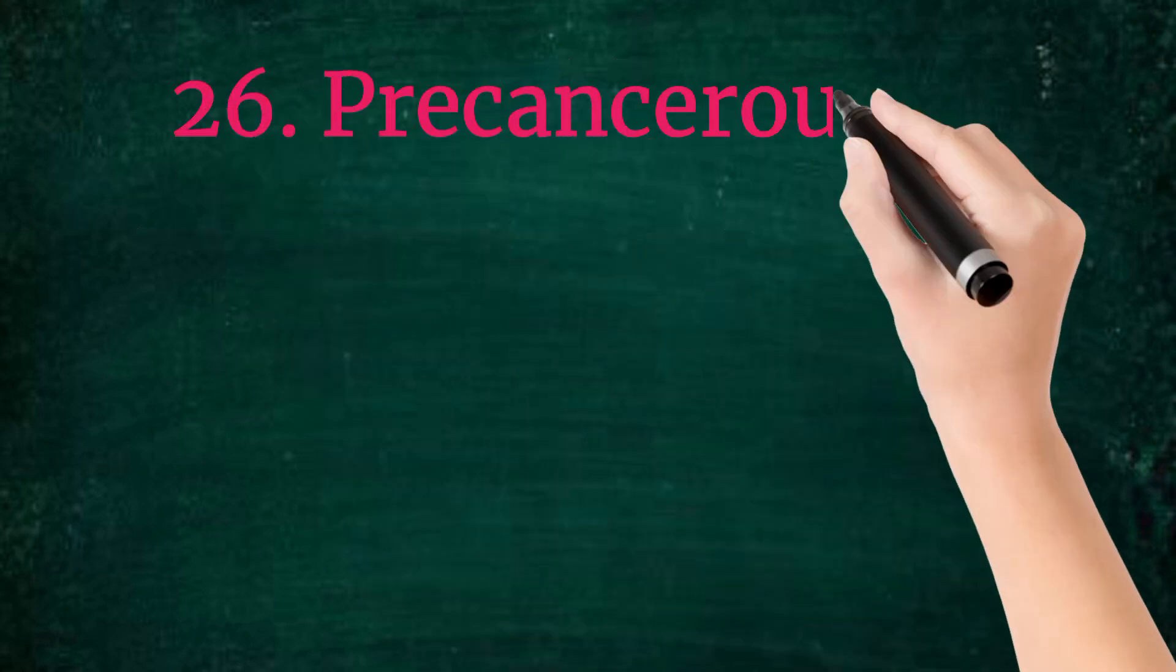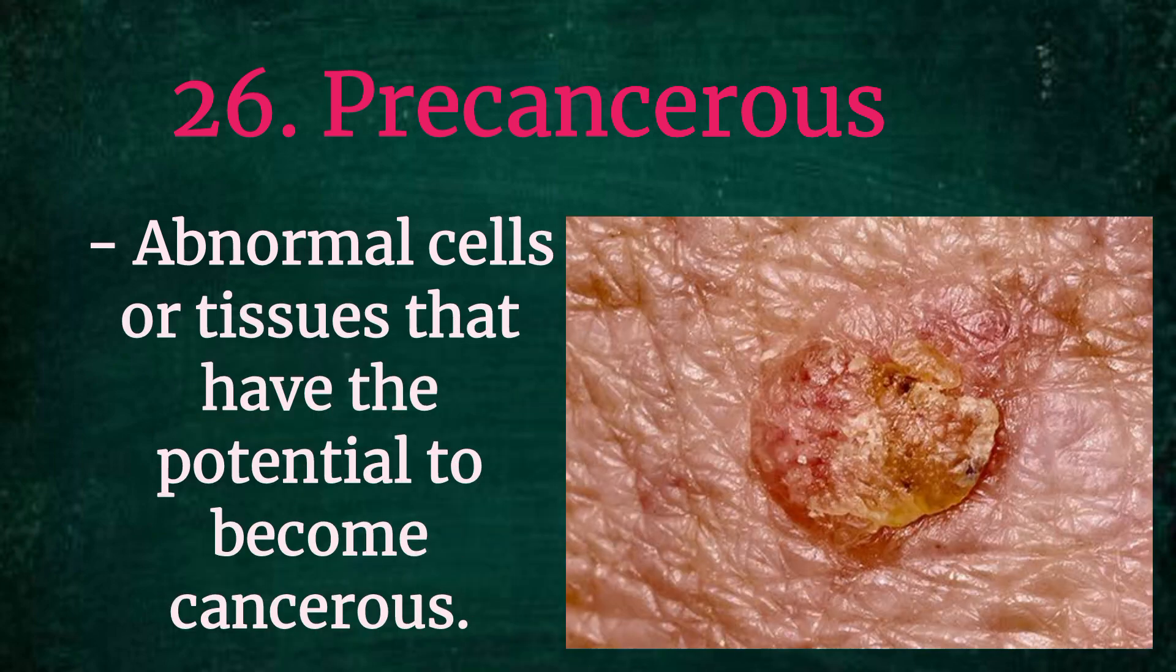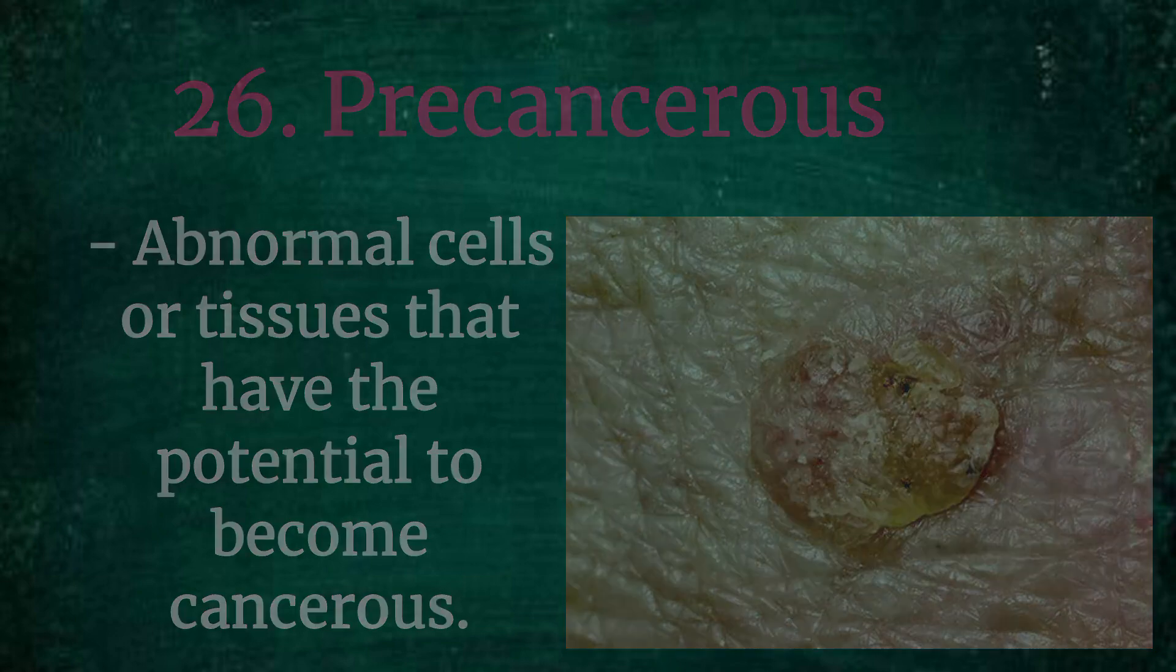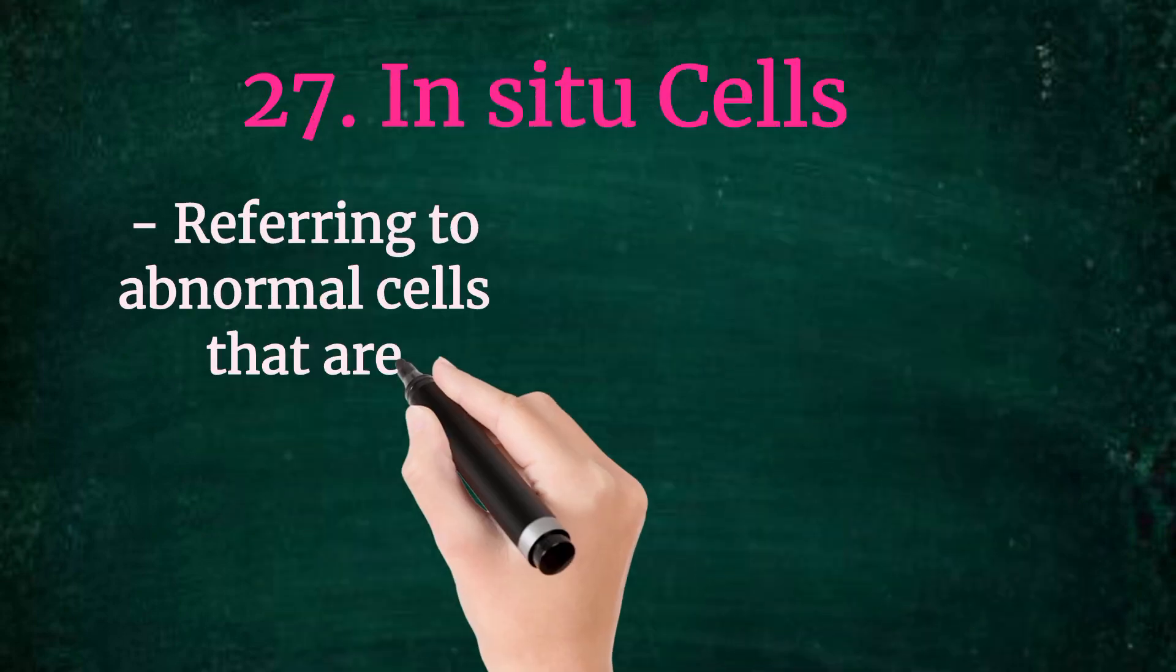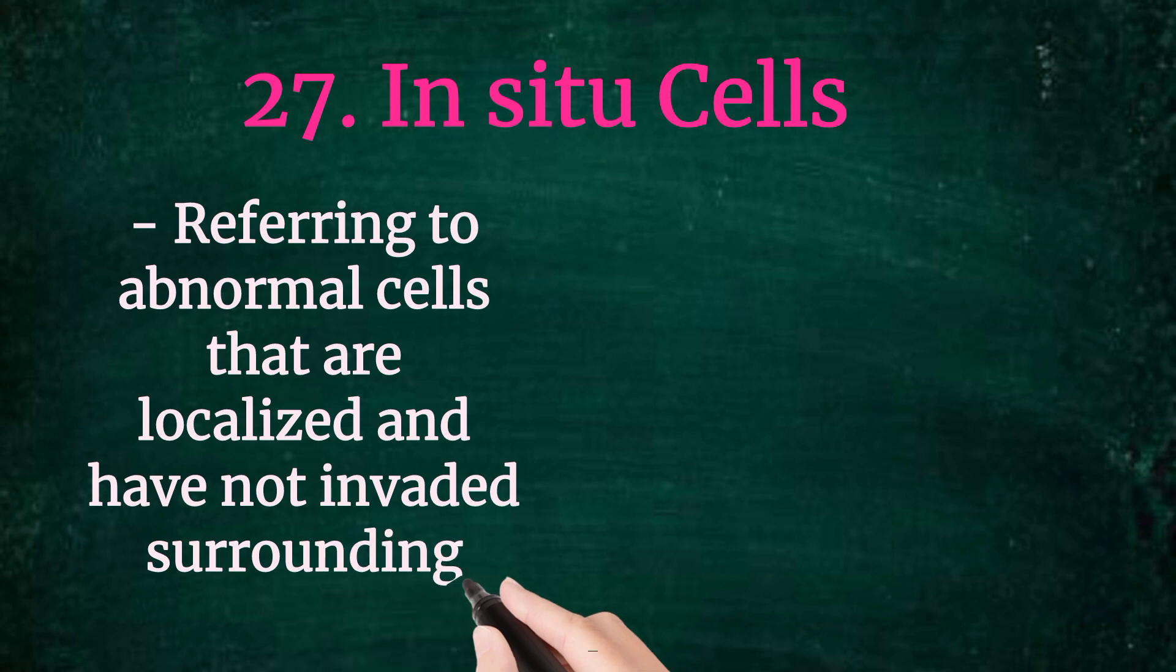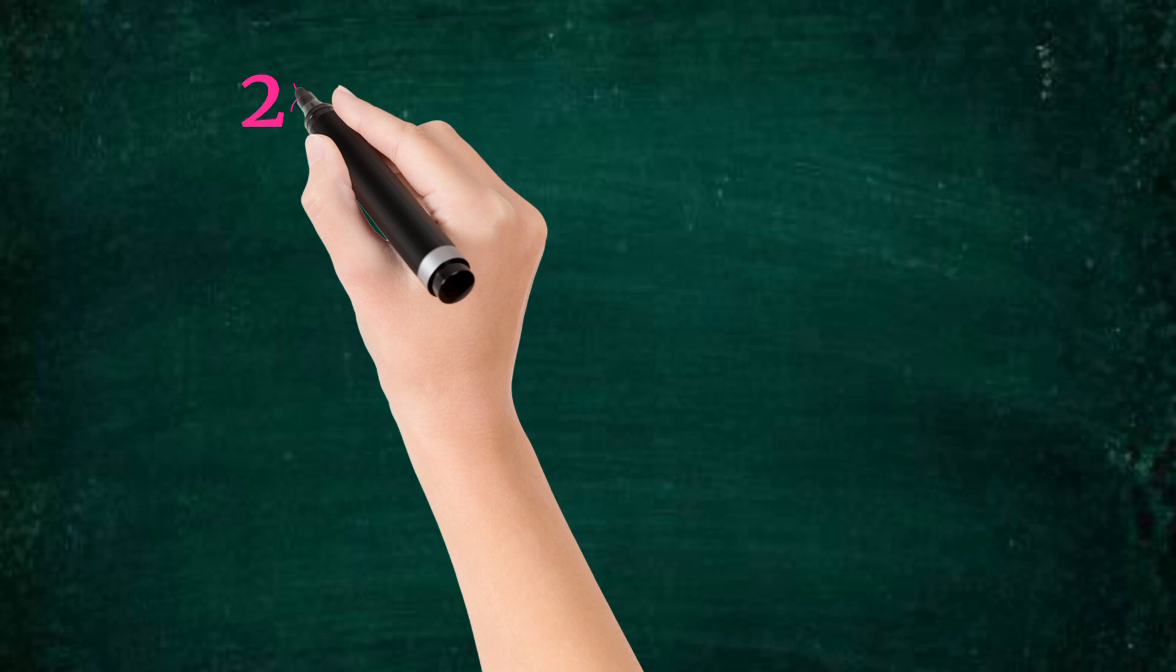26. Pre-cancerous. Abnormal cells or tissues that have the potential to become cancerous. As you can see in this picture, some structure you will see in pre-cancerous. 27. In situ. Referring to abnormal cells that are localized and have not invaded surrounding tissues. As shown in this picture.